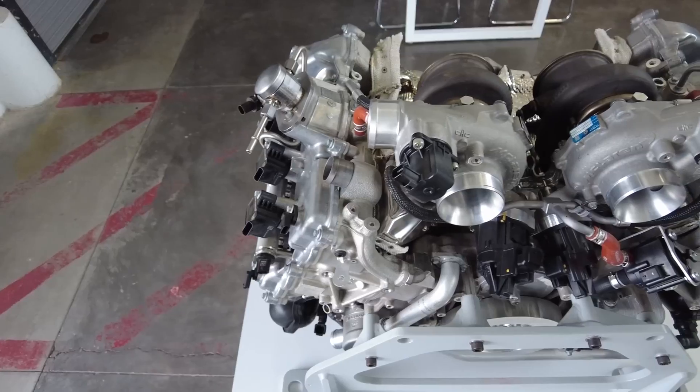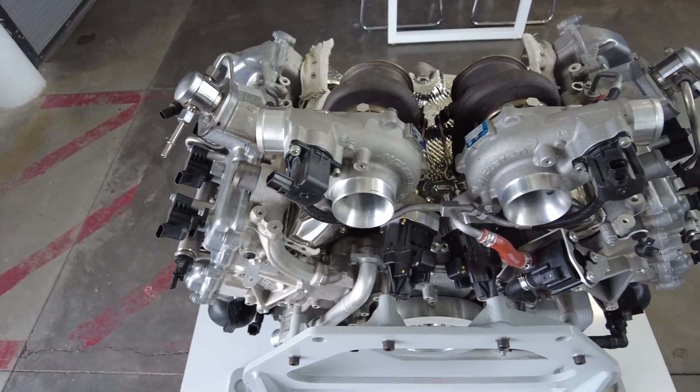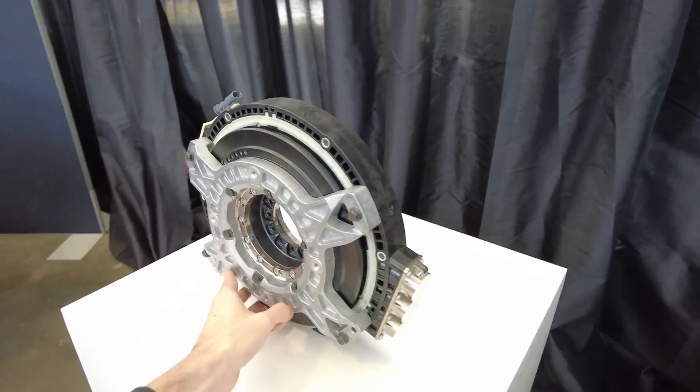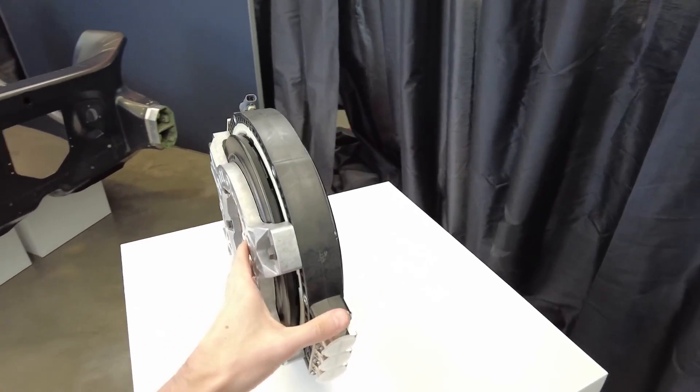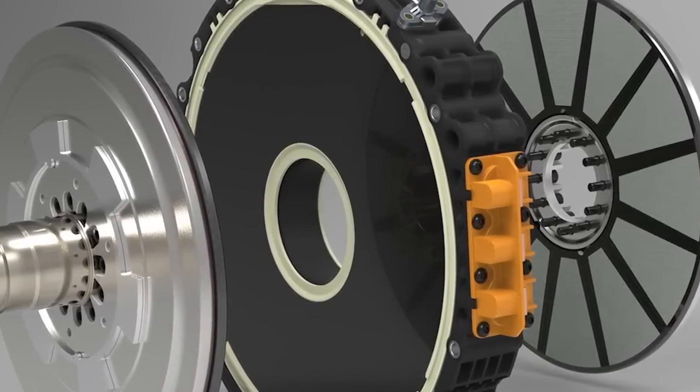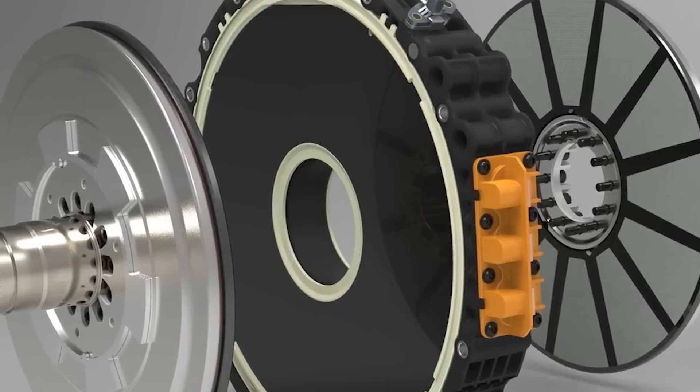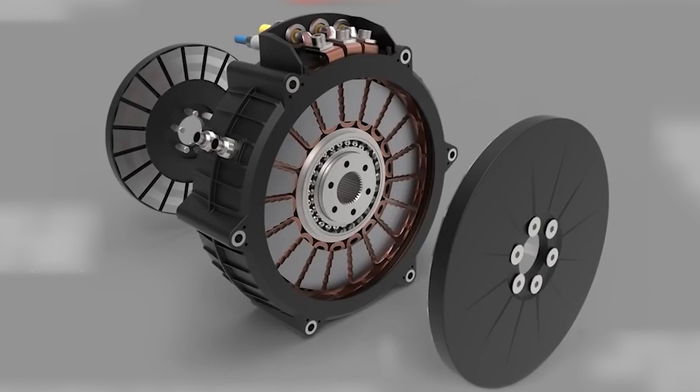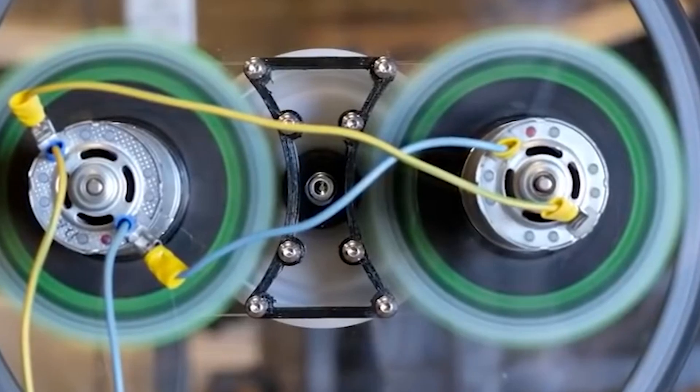What sets the Axial Flux motor apart? It's the design. Unlike traditional radial motors, the Axial Flux motor flaunts a flat, disc-shaped structure. This not only makes it more compact, but also enhances its power-to-weight ratio, a crucial factor for electric vehicles aiming for optimal performance.